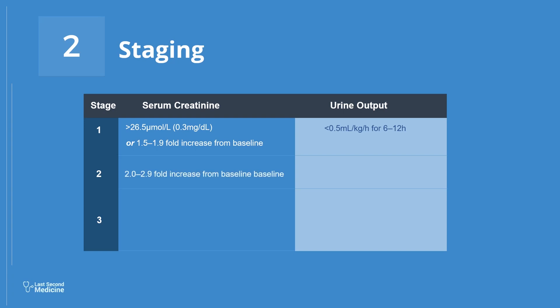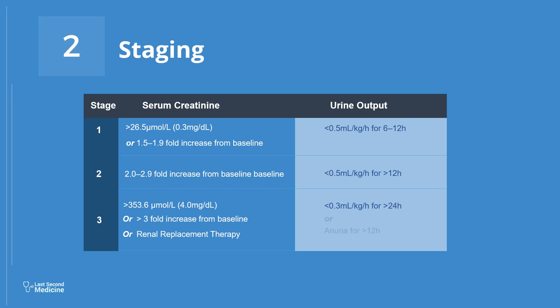AKI is Stage 2 if the rise in creatinine is 2 to 2.9 times that of baseline, or urine output is less than 0.5 milliliters per kg per hour persisting for more than 12 hours. AKI is Stage 3 if serum creatinine is greater than 353.6 micromole per liter, or the rise in creatinine is greater than 3 times baseline, or the patient is on renal replacement therapy, or urine output is less than 0.3 milliliters per kg per hour for greater than 24 hours, or there is anuria for more than 12 hours.